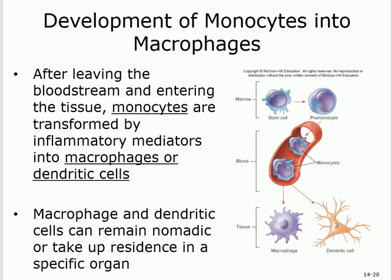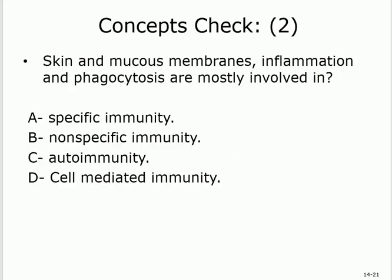Macrophage are found everywhere; dendritic cells are basically at the CNS. These macrophage and dendritic cells will float around the area but sometimes go to an organ and stay there. Phagocytosis is non-specific, second line.